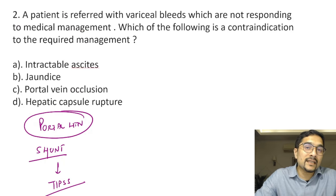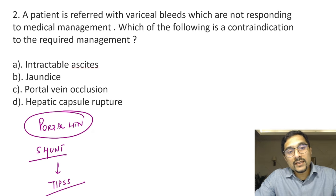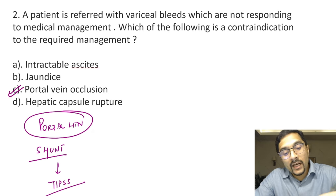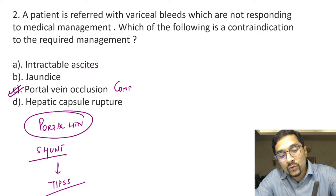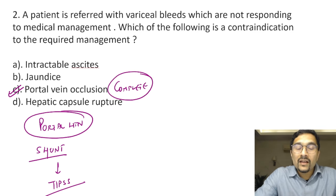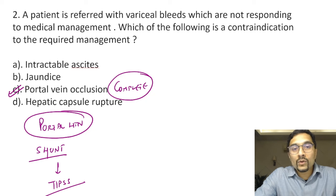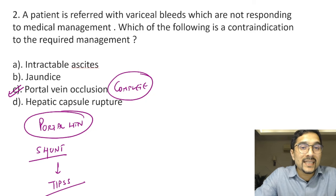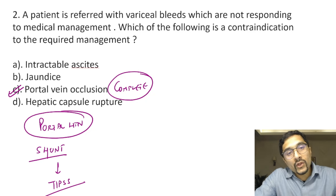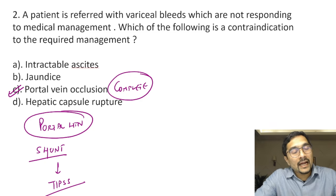The question asks when TIPS is contraindicated. It is contraindicated when there is a complete portal vein occlusion — because if the portal vein is occluded, there is nothing to shunt. Although some recent studies suggest it can still be done in certain cases, for exam purposes you should know that portal vein occlusion is a contraindication for TIPS, which is a non-selective shunt.